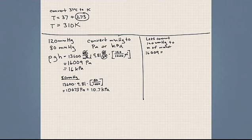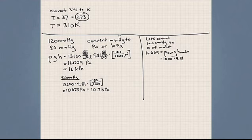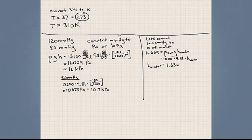We know the density of water is 1,000 kilograms per meter cubed, and we can use P = ρgh with g = 9.81 to solve for the height of the water column. Setting 16,009 Pascals equal to 1,000 times 9.81 times h, we find that 120 millimeters of mercury is equivalent to a water column height of 1.63 meters.